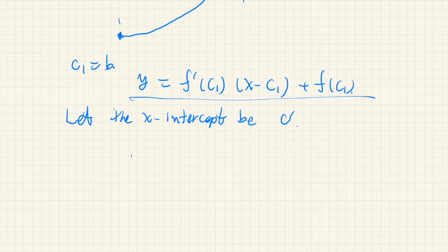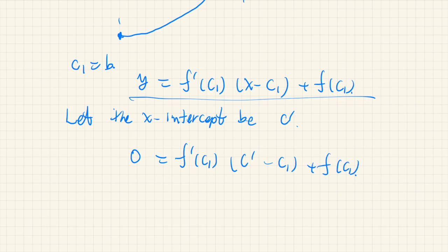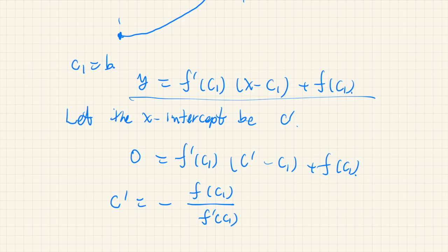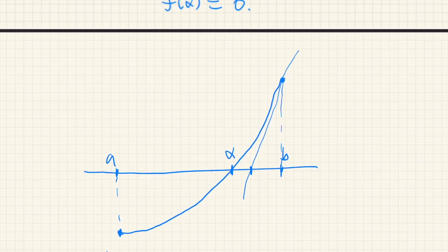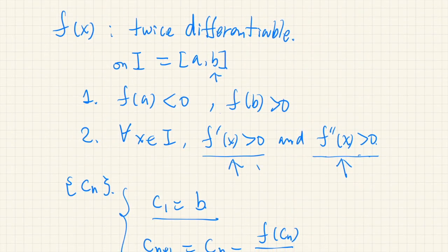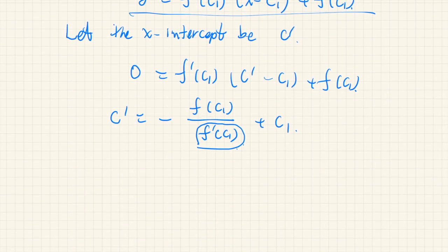At the x-intercept the y-coordinate is 0, so 0 equals f prime of C1 times (C prime minus C1) plus f of C1. Solving for C prime, we get C prime equals C1 minus f of C1 over f prime of C1. Note that we divide by f prime of C1, but this cannot be zero because by condition it is guaranteed to be always positive.